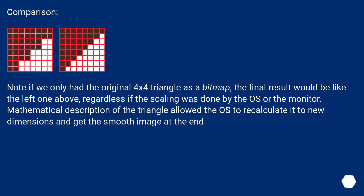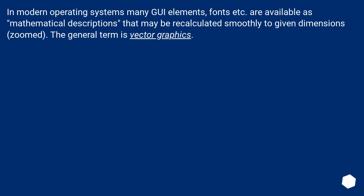Comparison: if we only had the original 4×4 triangle as a bitmap, the final result would look like the left one, regardless of whether the scaling was done by the OS or the monitor. The mathematical description of the triangle allowed the OS to recalculate it to new dimensions and get a smooth image. In modern operating systems, many UI elements and fonts are available as mathematical descriptions that can be recalculated smoothly — the general term is vector graphics.